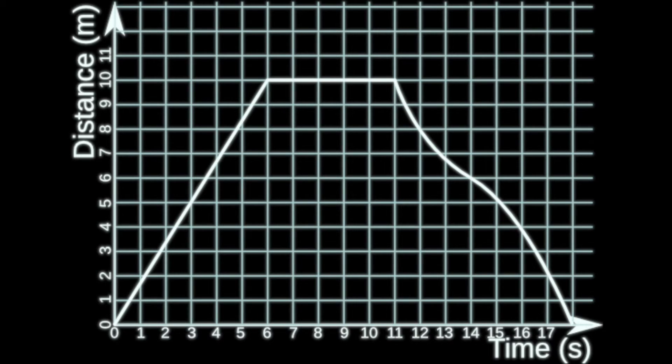So a few things that are vital to know is that the gradient of the line is equal to speed. So if it's a really steep line that means it's going extremely fast. However, if it's very not steep at all that means they're going quite slowly. Then if it's flat that means they're stationary and they're not moving.